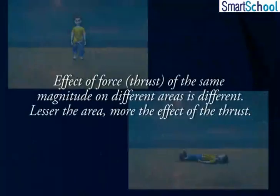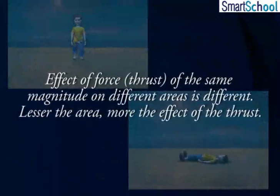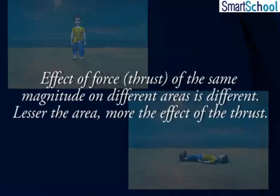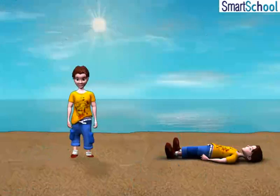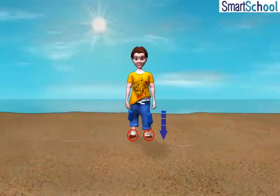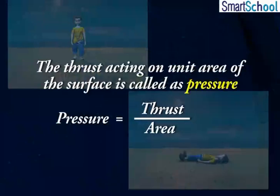We see that the effect of force — thrust — of the same magnitude on different areas is different. Lesser the area, more the effect of the thrust. That means the effect of thrust depends on the area on which it acts. The physical quantity that explains the dependence of thrust on area is pressure. The thrust acting on unit area of the surface is called pressure.